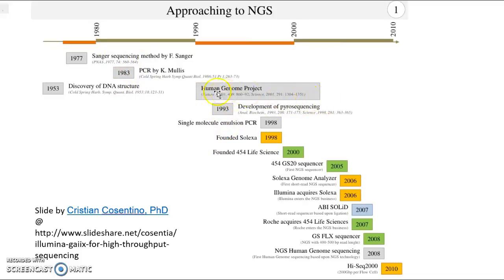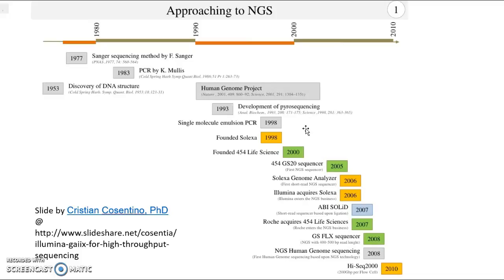The Human Genome Project began relying exclusively on Sanger sequencing. In 1993, a methodology called pyrosequencing was developed, considered by many to be second generation sequencing — with Sanger sequencing being first generation. Pyrosequencing is a method where every time a nucleotide is added to a growing sequence, it is detected by the emission of light due to a chemical reaction involving the pyrophosphate group released when a nucleotide is incorporated into a growing strand of DNA.